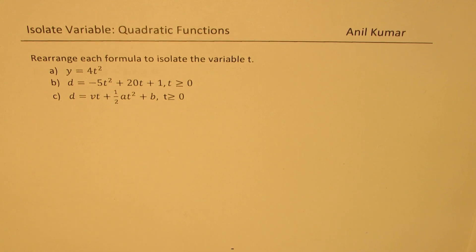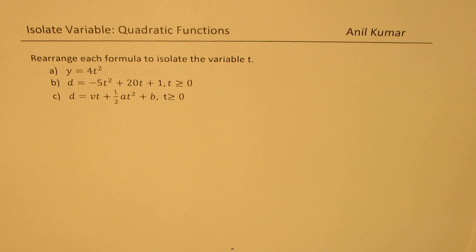Here's a request from one of our subscribers who wants to understand how to isolate a variable when a quadratic equation is involved. So I've taken up an example with variety which can help you to understand this particular topic. So we have three examples here.